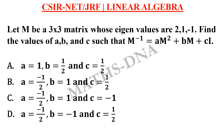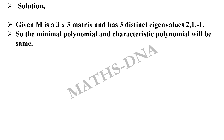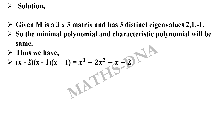This is a very simple question. All you need to know are just two results. As per the given data, the matrix M is a 3×3 matrix and it has three distinct eigenvalues. This gives us our first result: if the eigenvalues are distinct, then the characteristic polynomial and the minimal polynomial of the matrix will be equal, which is (x – 2)(x – 1)(x + 1), which equals x³ – 2x² – x + 2.